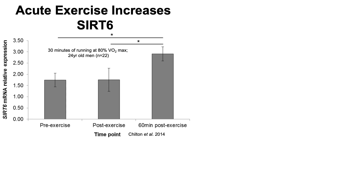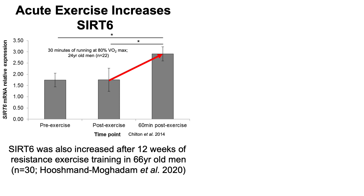What about exercise? An acute bout of exercise — 30 minutes of running at 80% of VO2 max in 24-year-old men — resulted in approximately a two-fold higher expression of SIRT6 levels in white blood cells, measured pre-exercise, immediately post-exercise, and one hour after exercise. SIRT6 has also been shown to be increased after 12 weeks of resistance exercise training in 66-year-old men, showing an important role for both cardiovascular and strength training in potentially increasing SIRT6 levels in people.